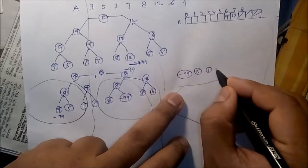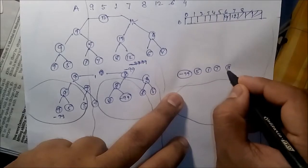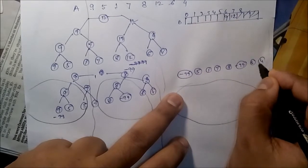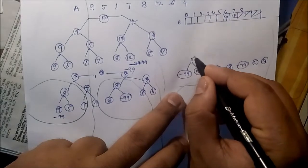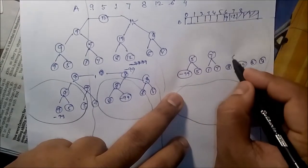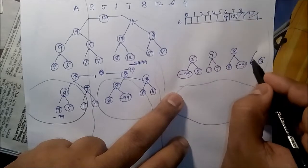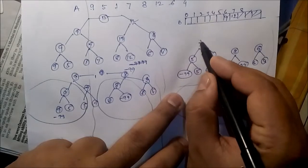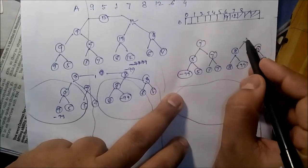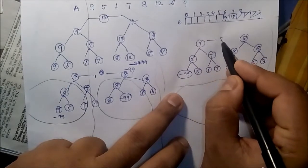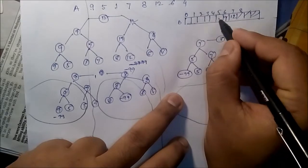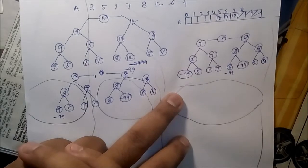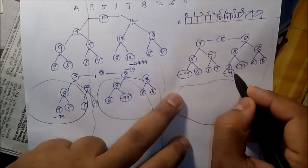5, 1, 7, 8, minus 99, 6 and 4. Bigger one is what? 5. Bigger one, 7. Bigger one, 8. Bigger one, say, 6. From this, bigger one is 7. From these two, bigger one is 8. From these two, bigger one is 8. Now, put 8 here and keep minus 8 is minus 99.